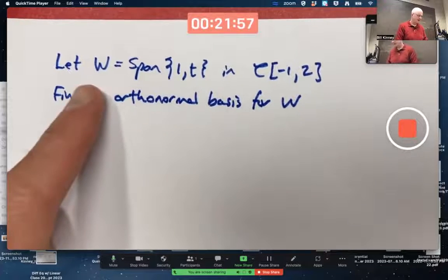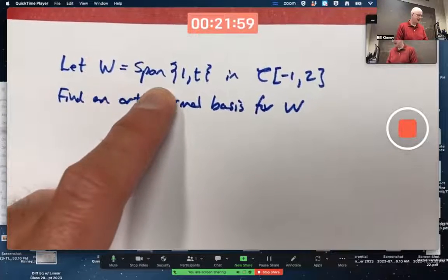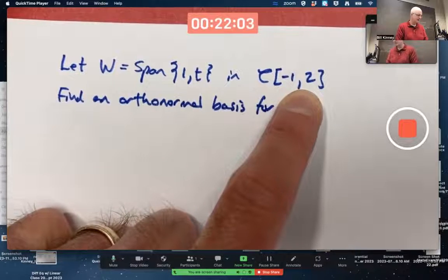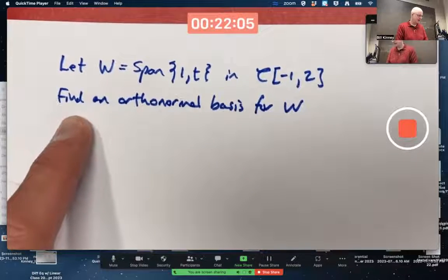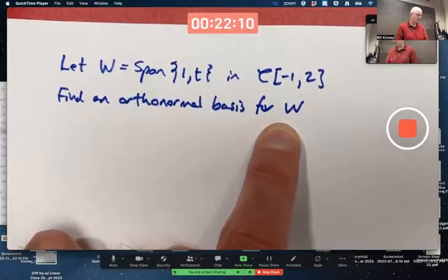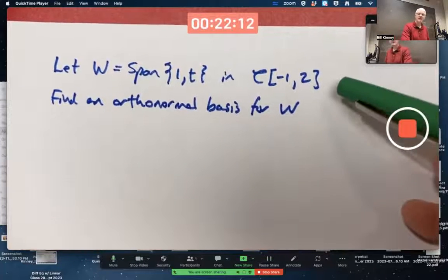Here's a weird-looking problem. Let W be the span of 1,t in C[-1,2], and the goal is to find an orthonormal basis for W. This is kind of a strange problem. All right, let's get our bearings here.